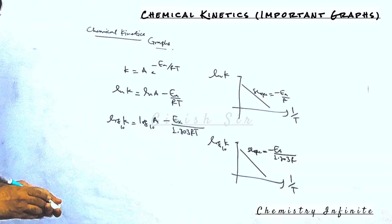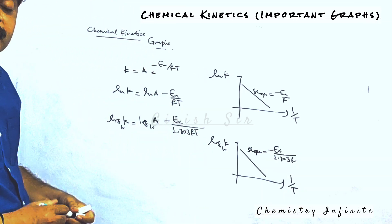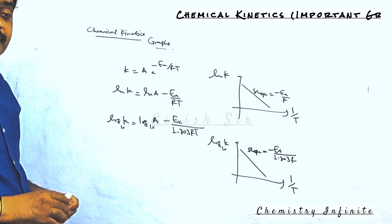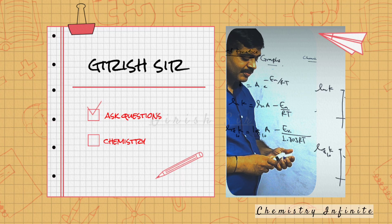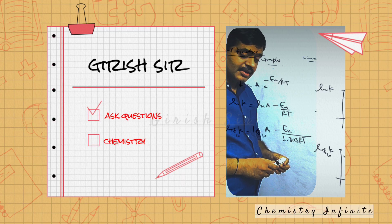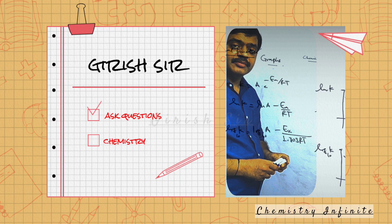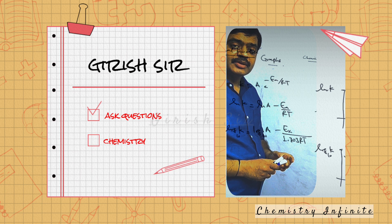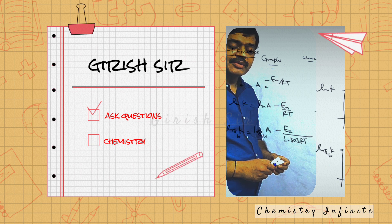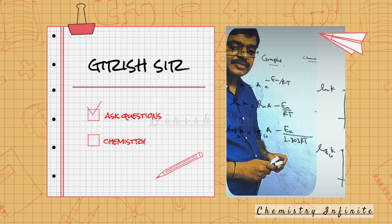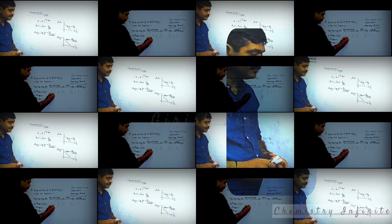So we have learned some important graphs of chemical kinetics today. Try to understand them and practice them. In case you have any queries, you can post them in the comments and we can try to answer them. Thank you.